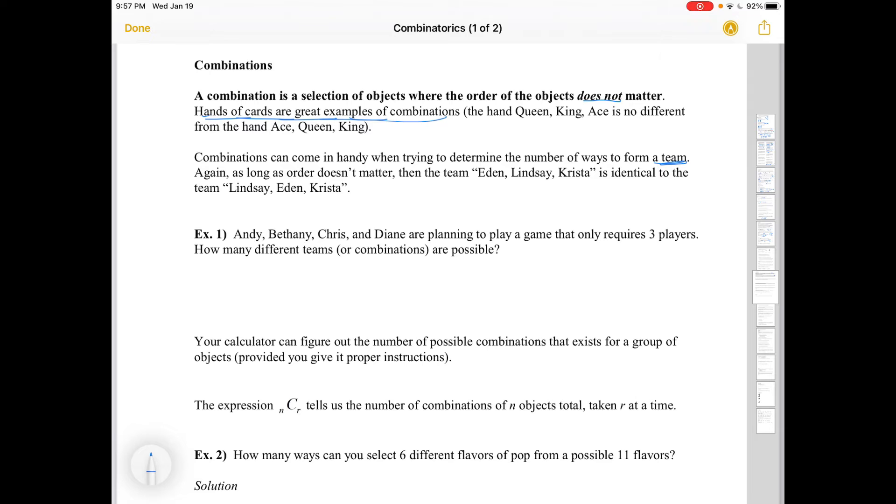So Andy, Beth, Chris, and Diane are planning to play a game that only requires three players. How many different teams are possible? We actually just did this. You could have Andy, Beth, and Chris. You could have Andy, Beth, and Diane. We could have Andy, Chris, and Diane. We could have Beth, Chris, and Diane. There are four possibilities.